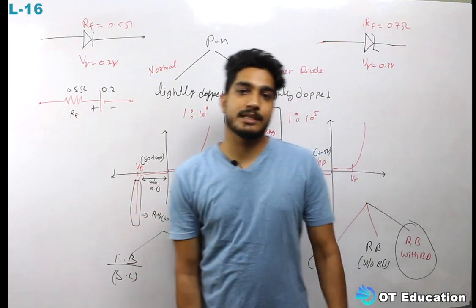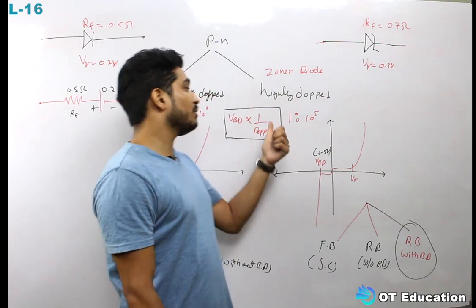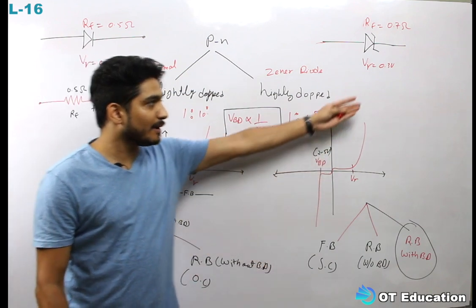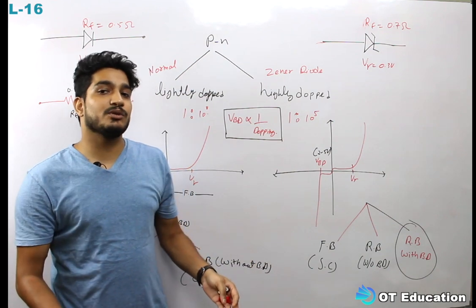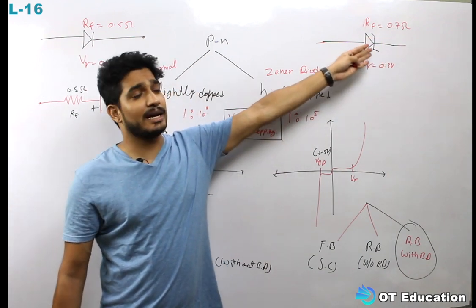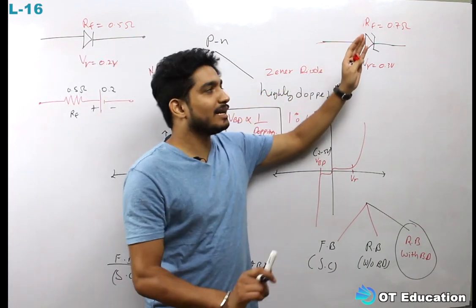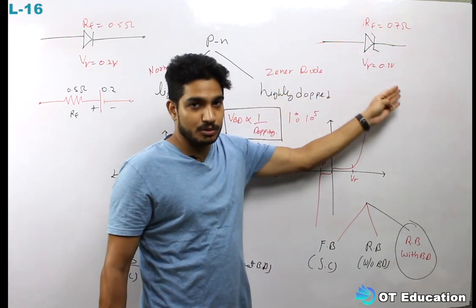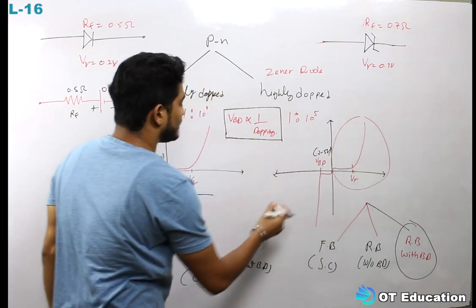These are the forward parameters of the normal diode, and the Zener diode has the same forward parameters. If we have to use the Zener diode in forward bias, the forward characteristics of normal diode and Zener diode are the same. So if I have to use forward bias, the equivalent circuit will be the same as the normal diode.